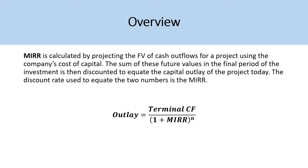So a quick overview. MIRR is calculated by projecting the future value of cash outflows for a project using the company's cost of capital. The sum of these future values in the final period of the investment is then discounted to equate the capital outlay of the project today. So looking at a project, you have cash outflows — what you spend to invest in that project — and cash inflows, which is what you receive. The cash inflows are compounded all the way to the final period of that investment horizon and then discounted back to equate the outlay.